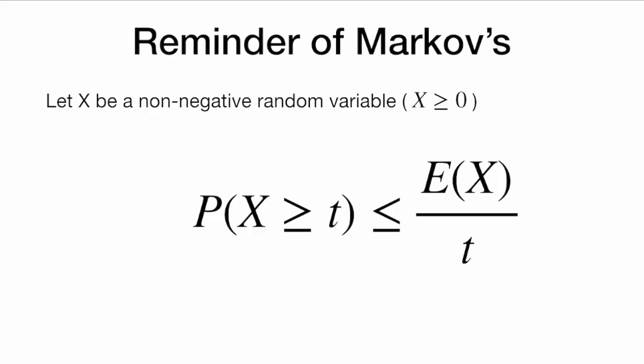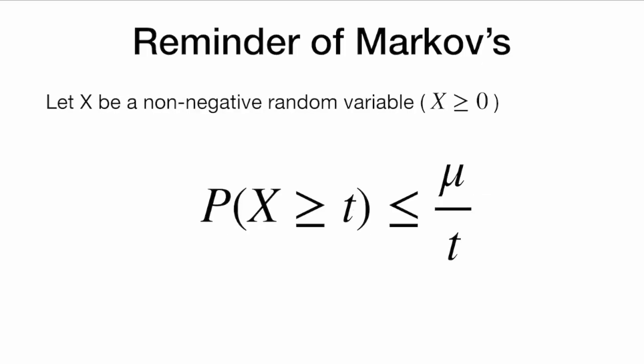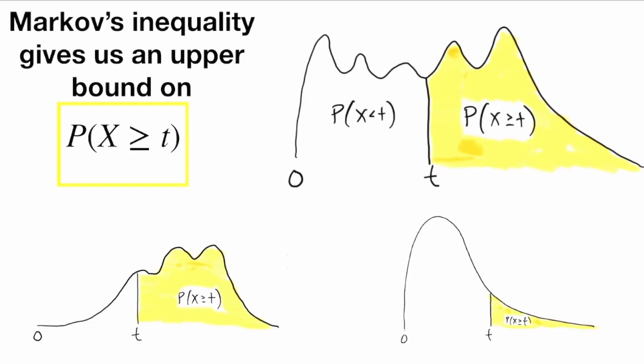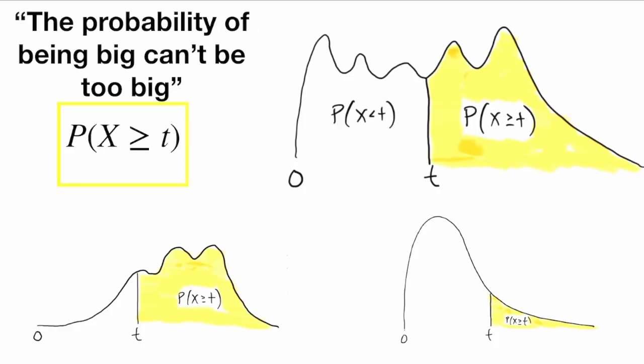As a reminder of Markov's inequality: if we let x be a non-negative random variable, meaning it's always at least zero, then the probability that x is at least t is less than or equal to E[x] over t, or mu over t — same thing. So Markov's inequality gives us an upper bound on the probability of x being at least t. Visually, that means the yellow areas have an upper bound — they are not too big.